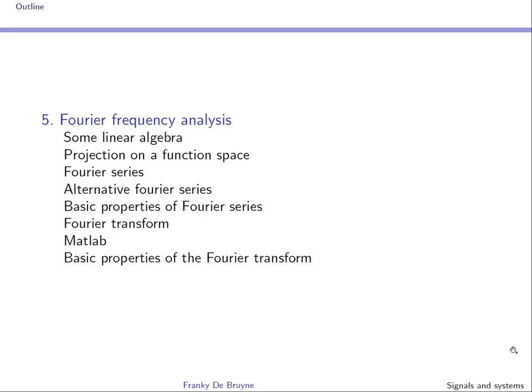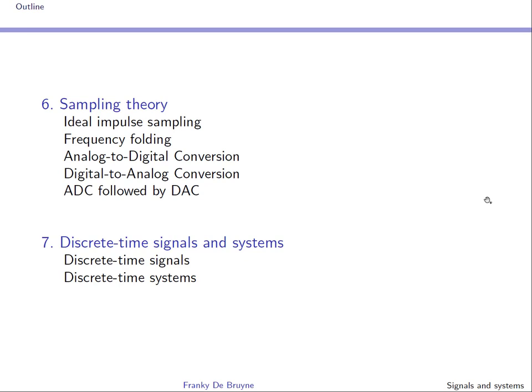Section 6 covers sampling theory. To process signals using a computer, we need to sample them, quantize them, and code them to obtain a digital signal — this is analog-to-digital conversion. Sometimes we need to reconstruct an analog signal from a digital one, which is called digital-to-analog conversion. This section covers the practical aspects of sampling and reconstruction, focusing on the important phenomenon of frequency folding.